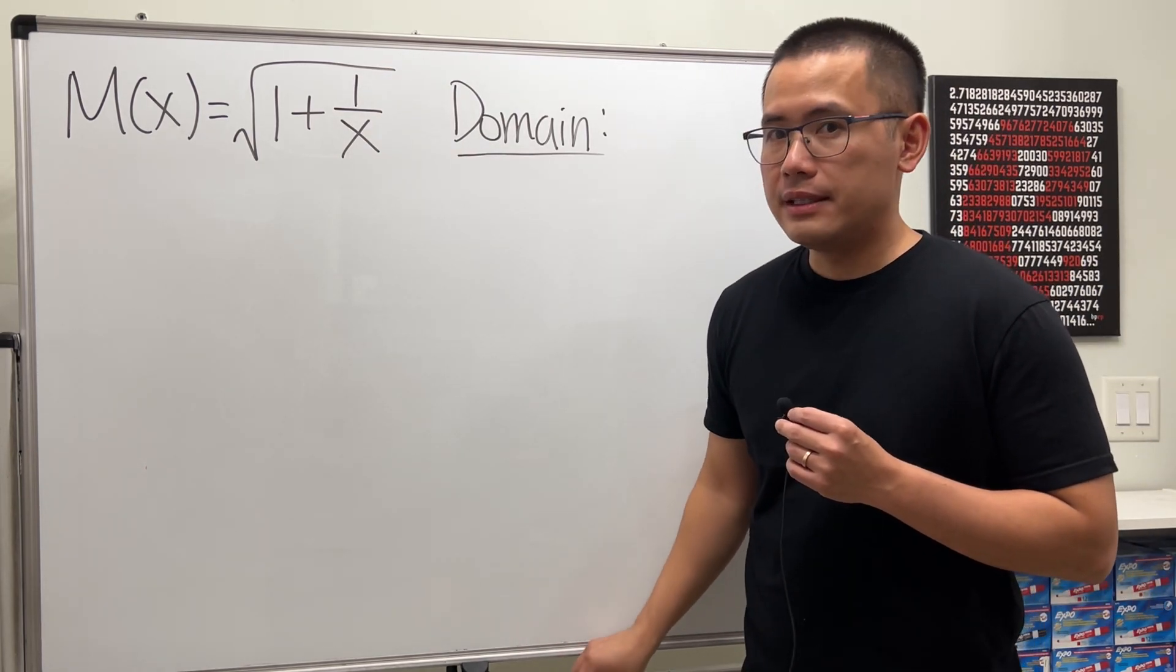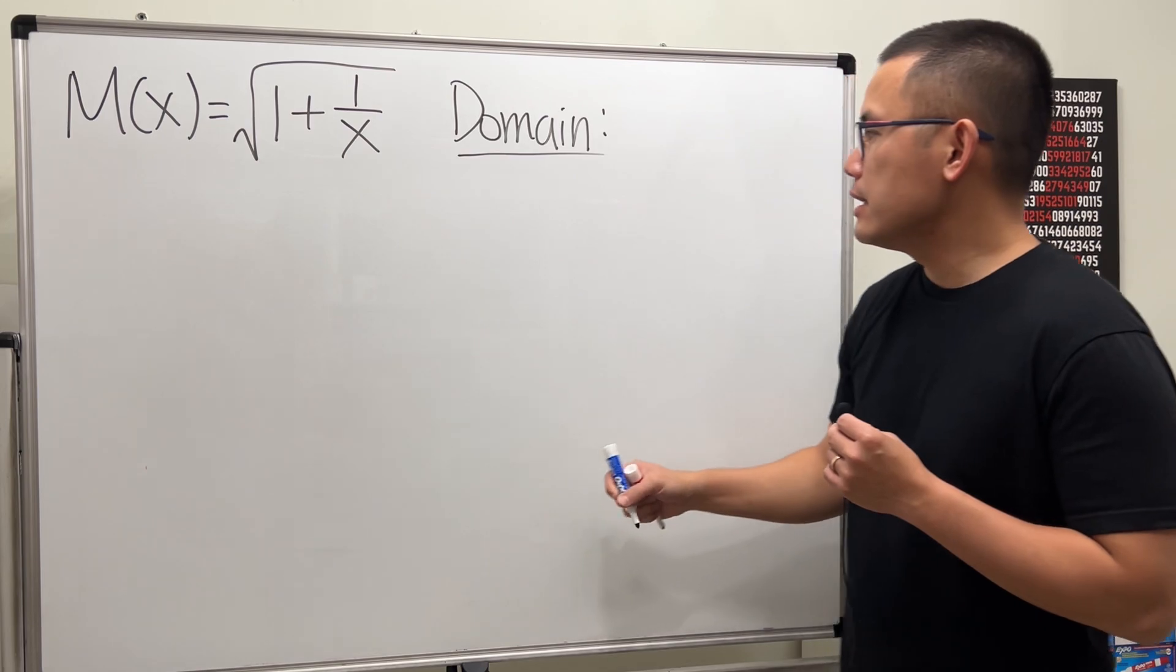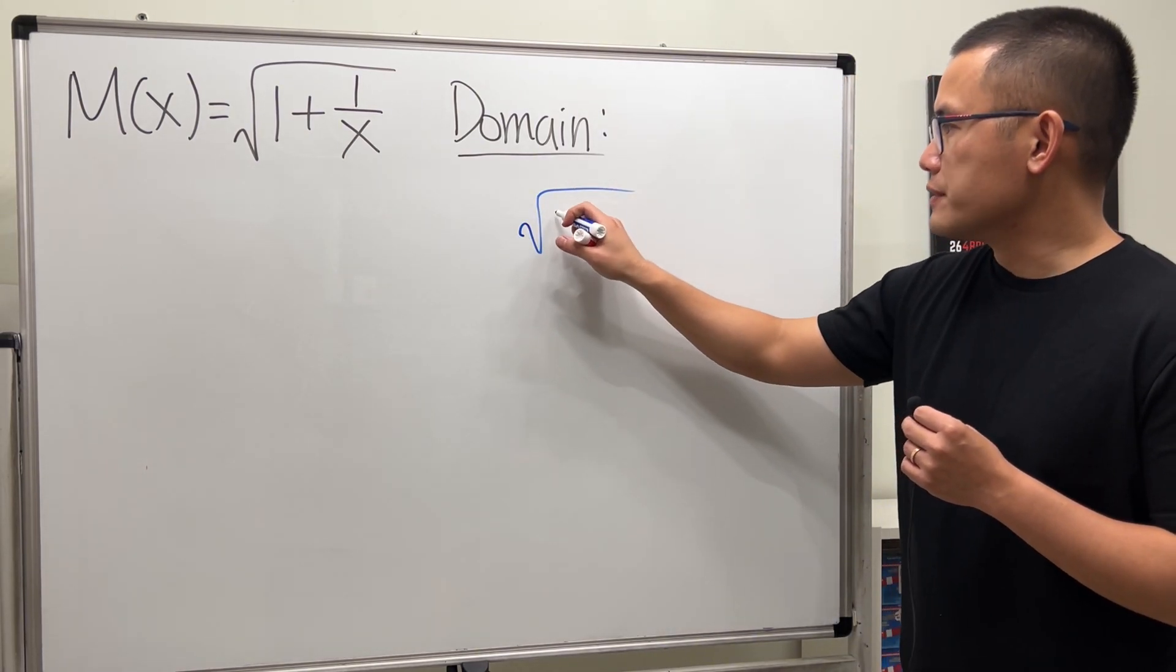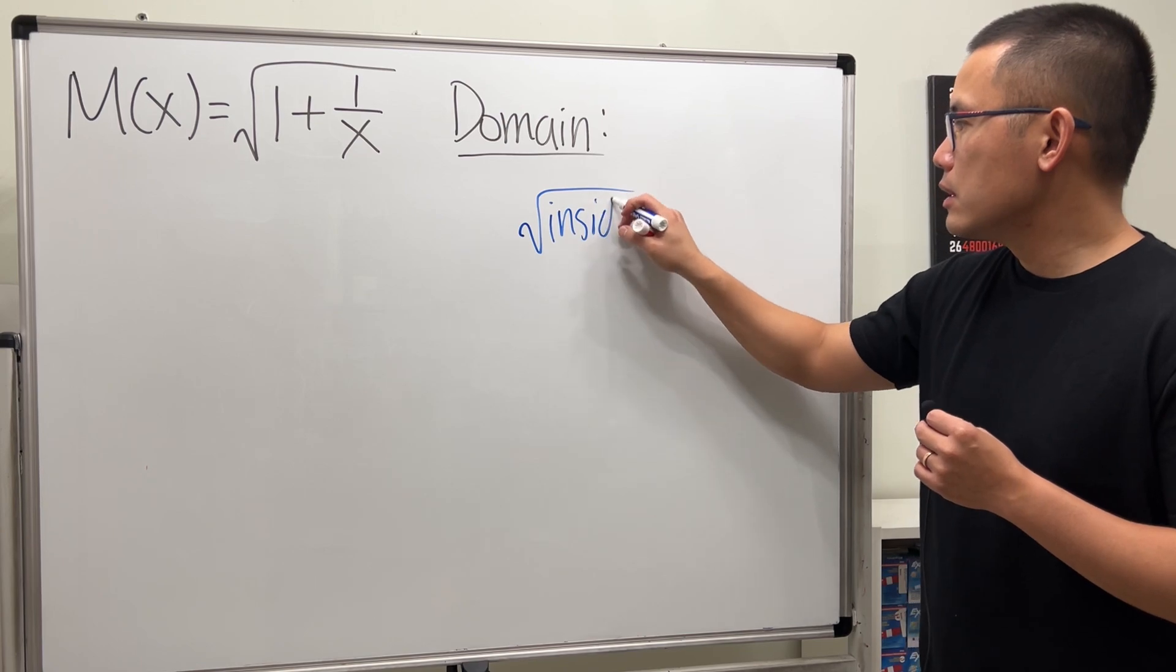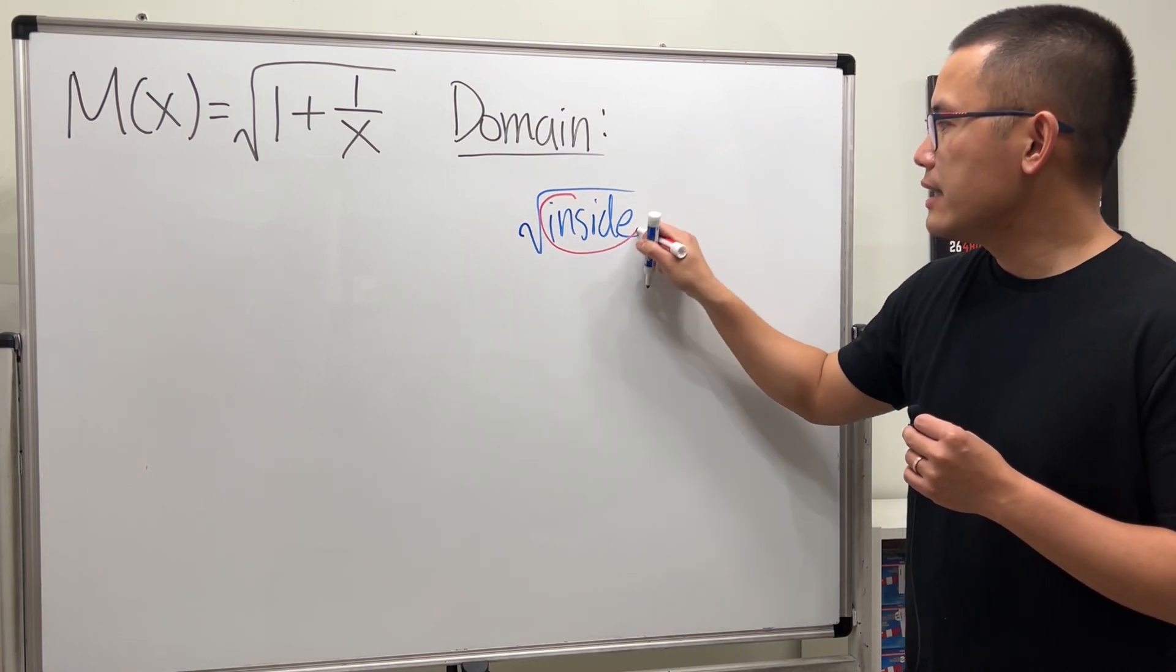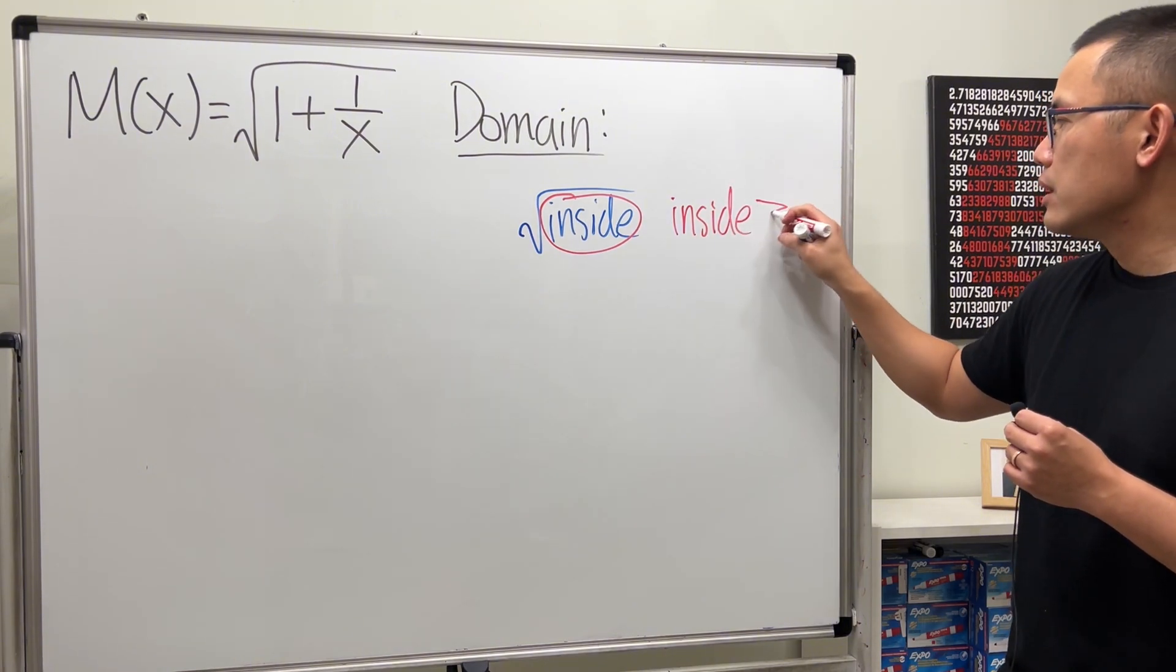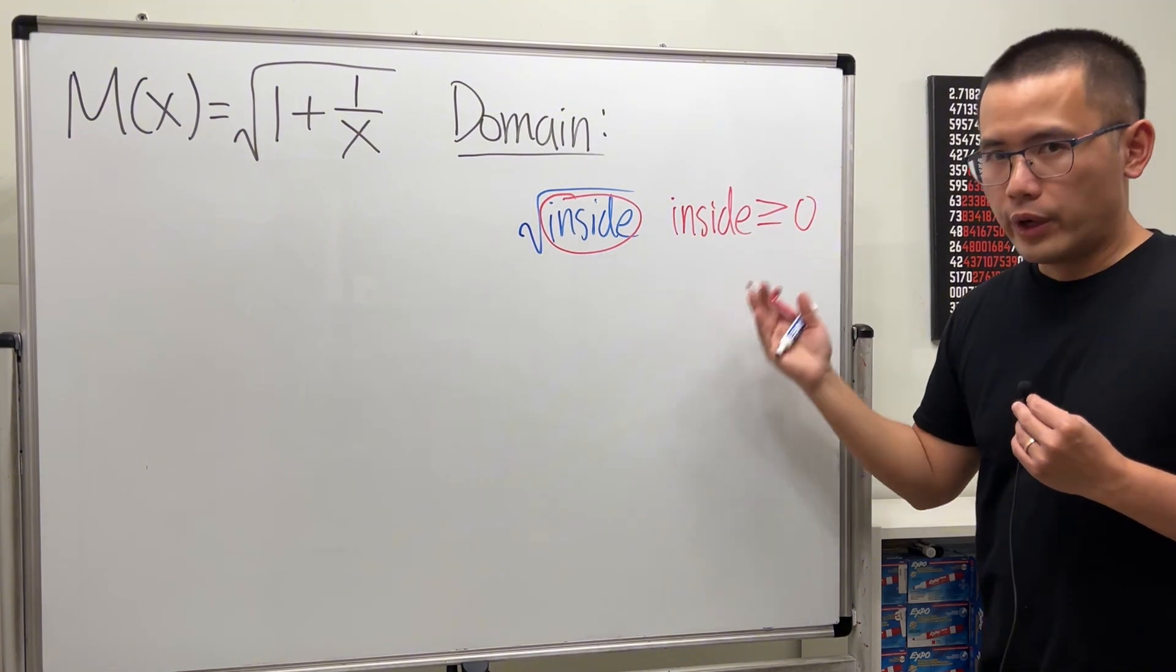First thing first, we have a square root of something inside, right? So we will have to keep in mind, whenever we have square root of something inside, we have to make sure that the inside is non-negative. In another word, it has to be greater than or equal to 0.